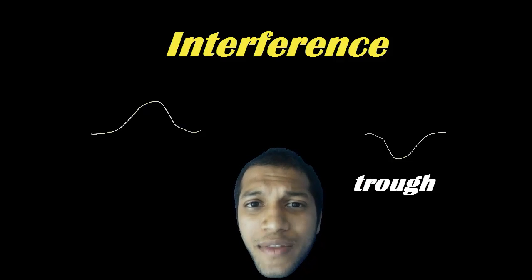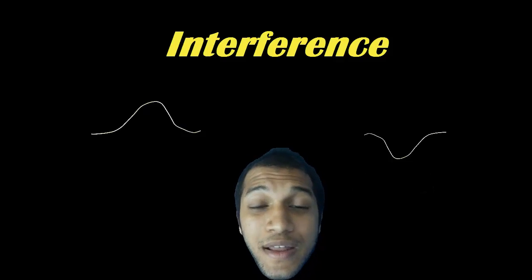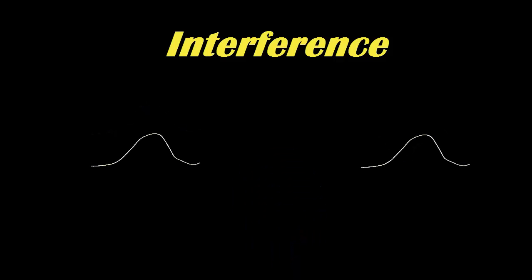Now, what happens when two waves interfere? They can interfere in such a way that the two mountains meet each other, and when they do that, they create a bigger mountain. Or the two troughs meet each other, the two valleys, and they make a bigger valley.